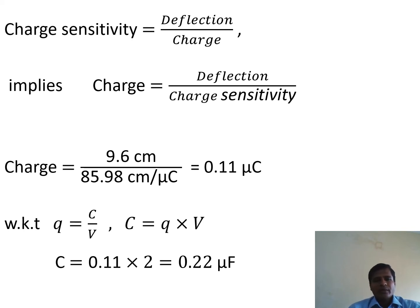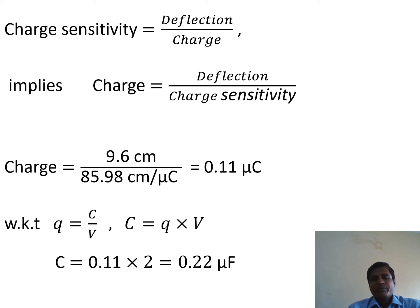Next, the charge on the condenser is expressed as Q = C × V, where C is the capacity of the condenser and V is the voltage across the plates. Substituting Q = 0.11 microcoulombs and V = 2 volts, we get C = Q / V, so the capacity of the condenser C = 0.22 microfarad.